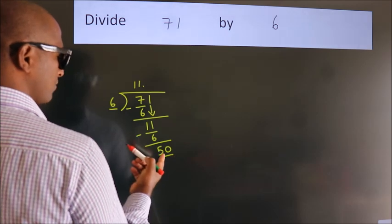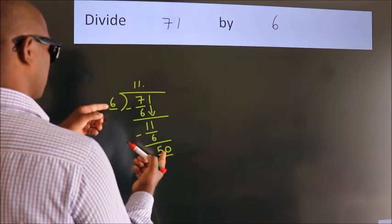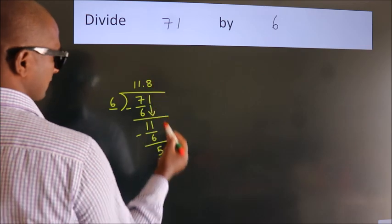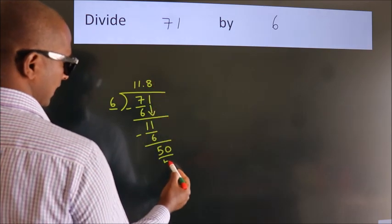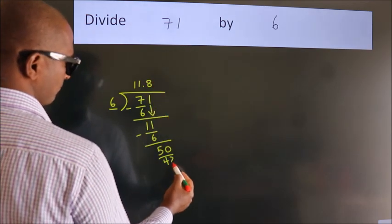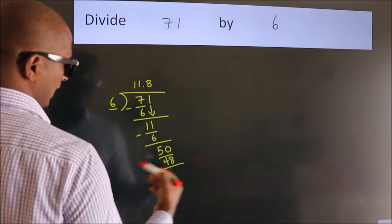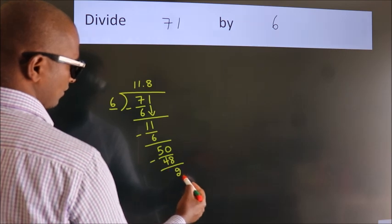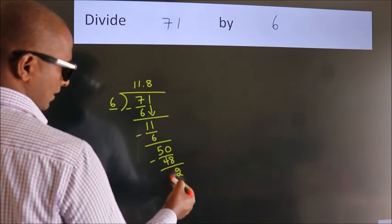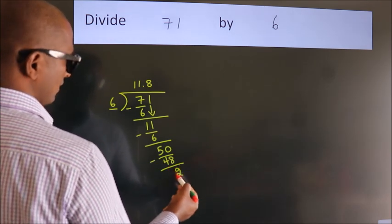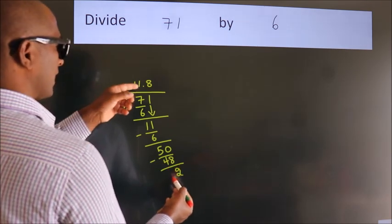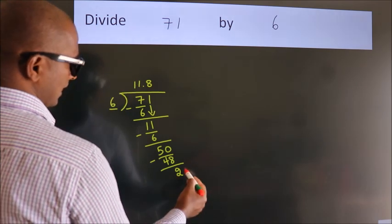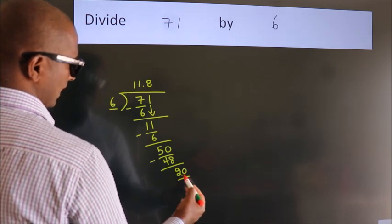A number close to 50 in the 6 table is 6 times 8 is 48. Now we subtract. We get 2. After this, we already have the decimal, so directly take 0. So, 20.